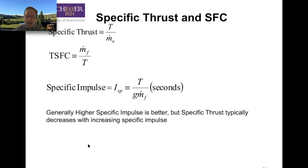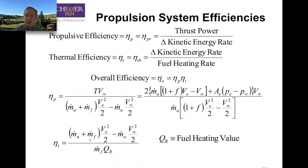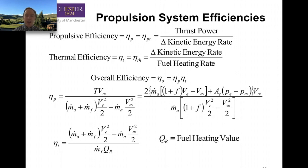Our thermal efficiency, on the other hand, is our delta kinetic energy rate divided by the fuel heating rate — that's the mass flow of fuel times the fuel heating value. For something like kerosene used in a jet engine, that's about 42 megajoules per kilogram. Hydrogen is obviously higher than that, and heavier fuels are lower. The interesting thing is that delta KE appears in both the numerator of thermal efficiency and the denominator of propulsive efficiency, so what we do to raise thermal efficiency very often hurts propulsive efficiency.